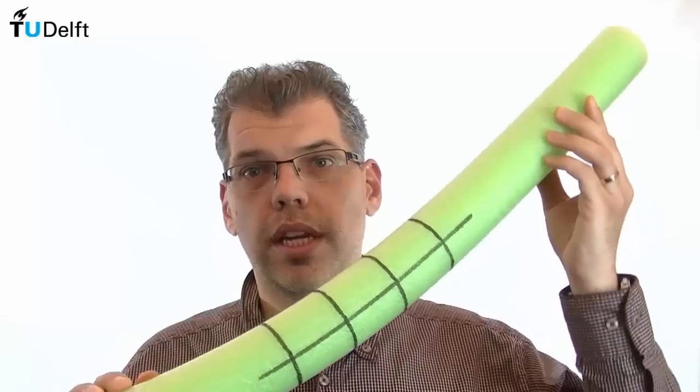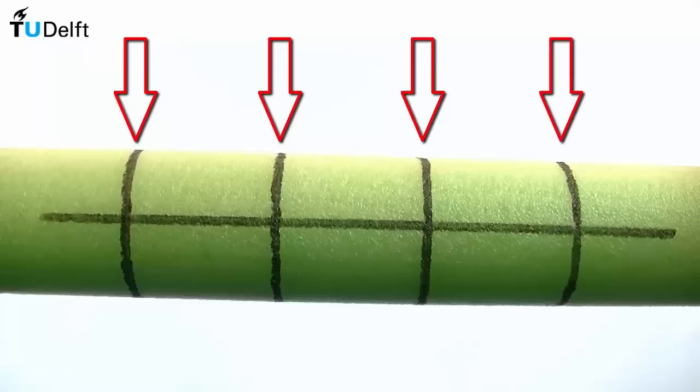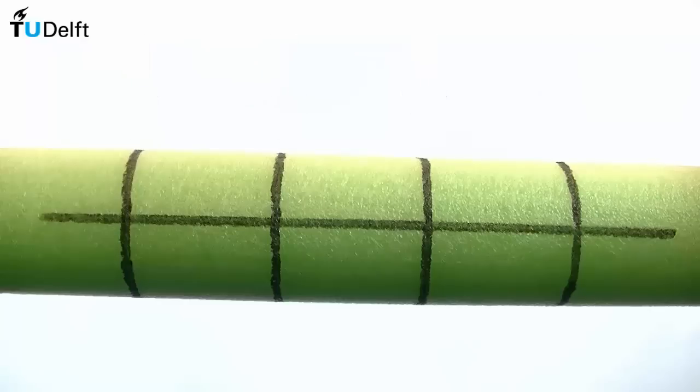For a deformable shaft, I will be using this foam pool toy that is very flexible and has a circular cross-section. On the surface of the shaft, I have drawn four lines around its circumference, distributed equally along its length. Additionally, a line parallel to the axis of the shaft has also been drawn on the surface.